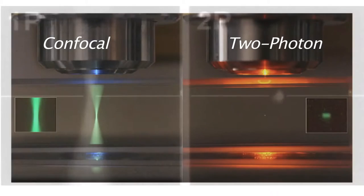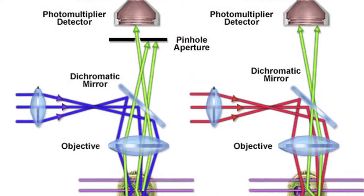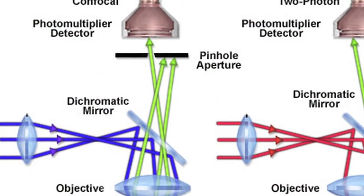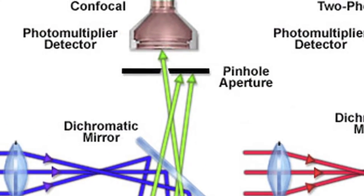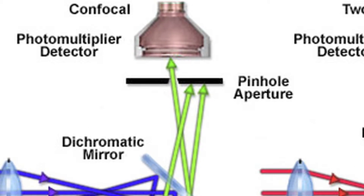Importantly, since the emission of fluorescence only happens at the focus point, there is no extra photobleaching or out-of-focus fluorescence that must be blocked, for example by the pinhole plate that is used in confocal microscopes.